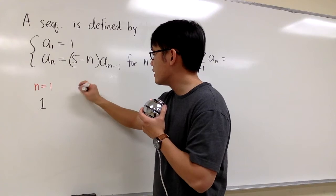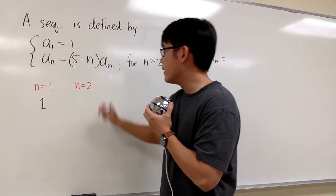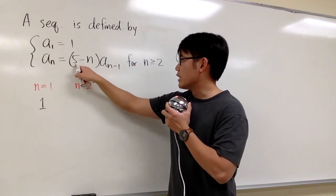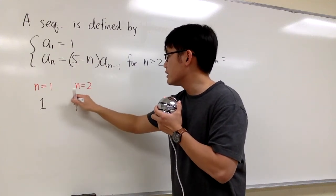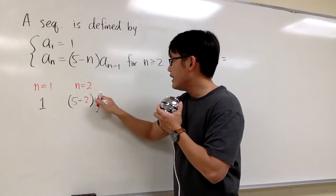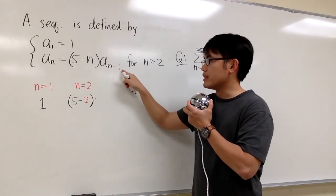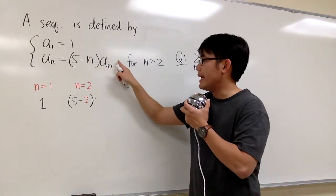And then for the next term, that's when n is equal to 2, and to get the next term, I have to plug in 2 into here. So I have to do 5 minus 2 first, and then we multiply by a₂₋₁. 2 minus 1 is 1, so we have to multiply by a₁.